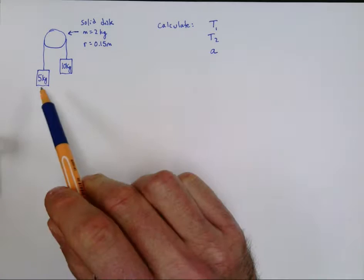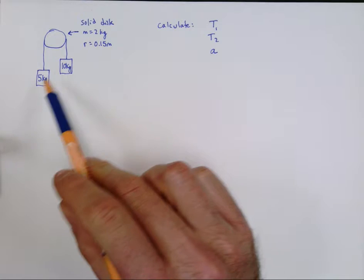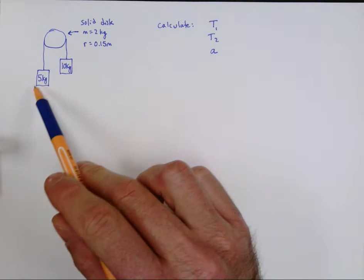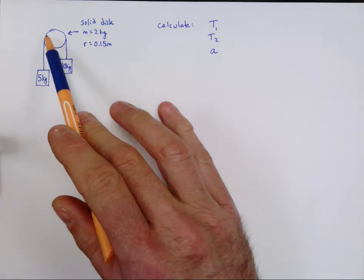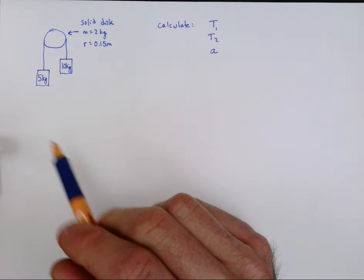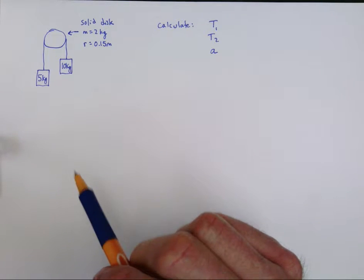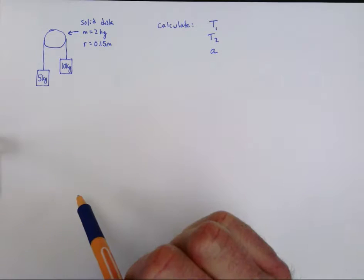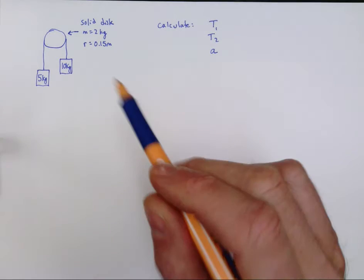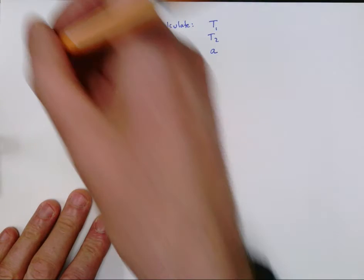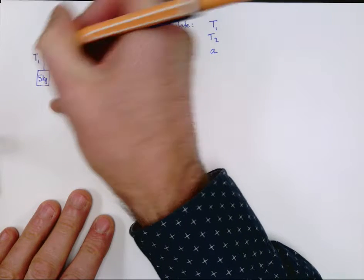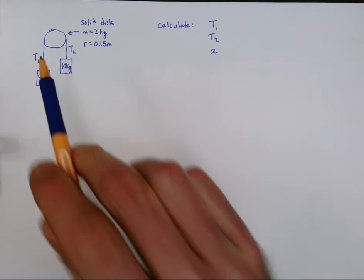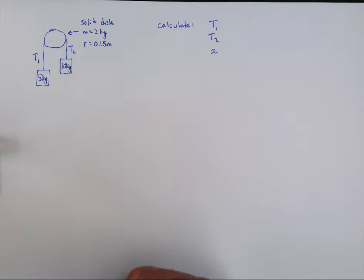Here's a problem where we have a pulley. In the past we've solved pulley problems assuming that the pulley itself doesn't have any mass. But now we're going to acknowledge that pulleys have masses. One of the things that means is that the tension on this side — T1 — and the tension on this side — T2 — those tensions are not the same as one another.